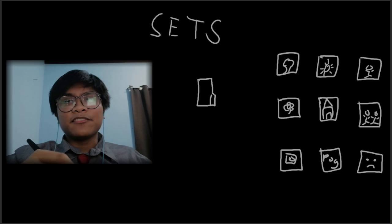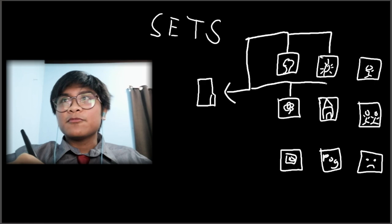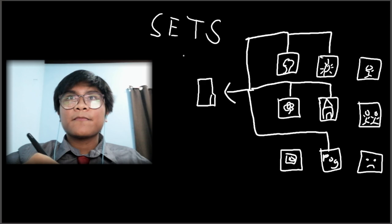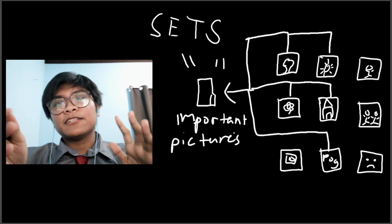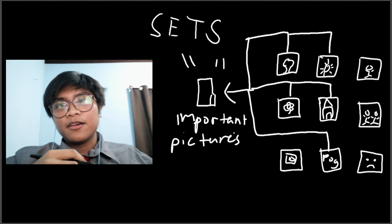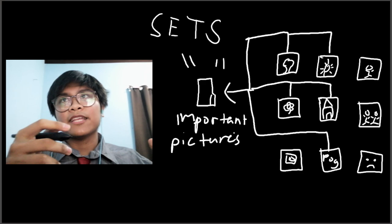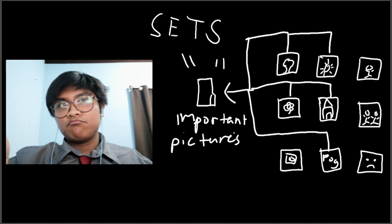Let's set the scene: imagine having an image gallery without any folders to sort them. You can have thousands and thousands of pictures but they won't be sorted — just lots of clumps of mess. But what if you decide to create a folder and name it 'important pictures' and put every single important picture into it? That is what we call sorting, and that is what sets are and what they aim to be.